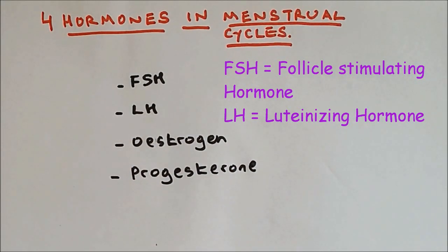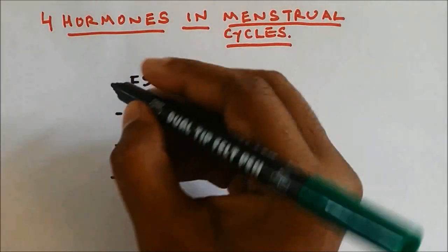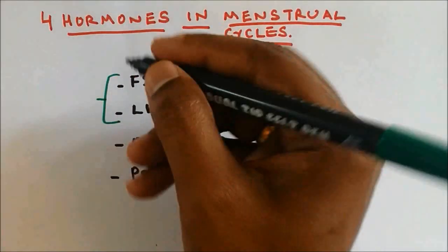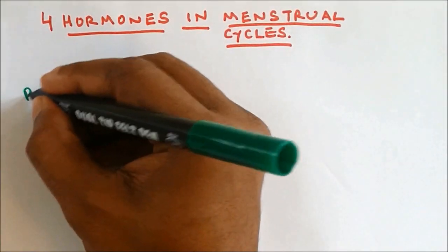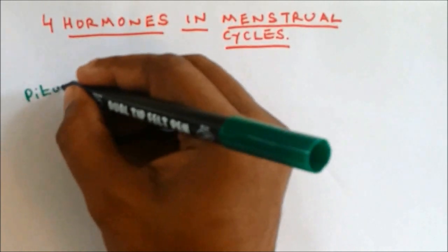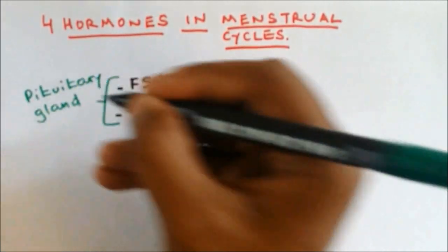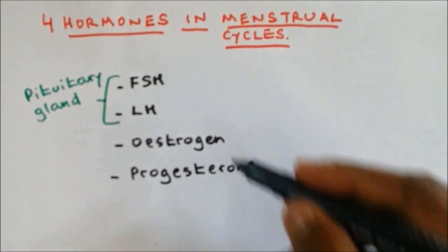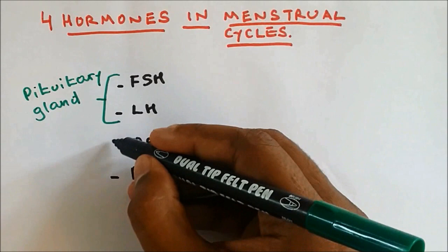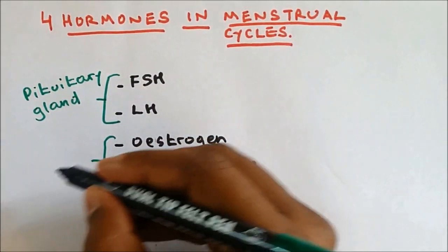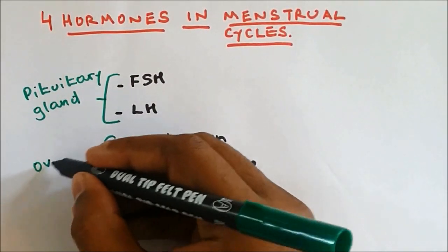FSH and LH are made in the pituitary gland, whereas Oestrogen and Progesterone are made and released from the ovaries.